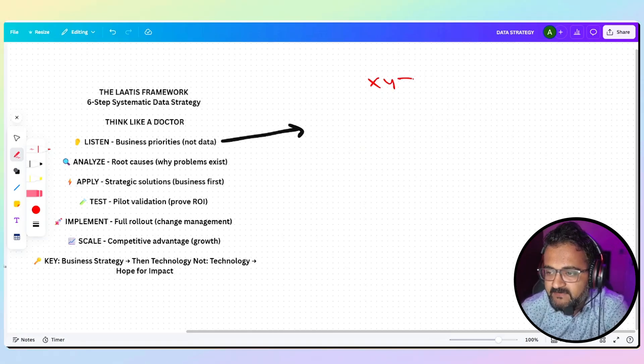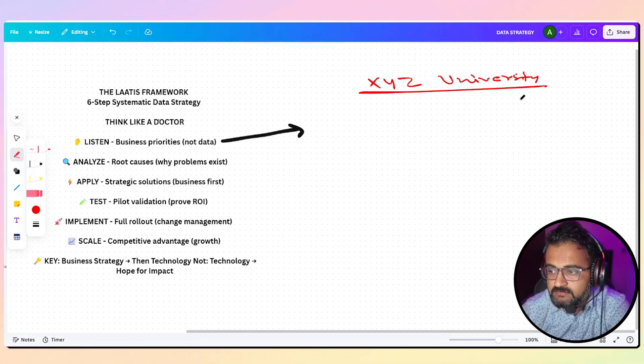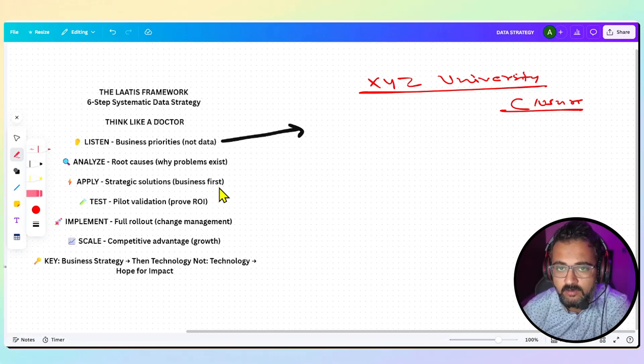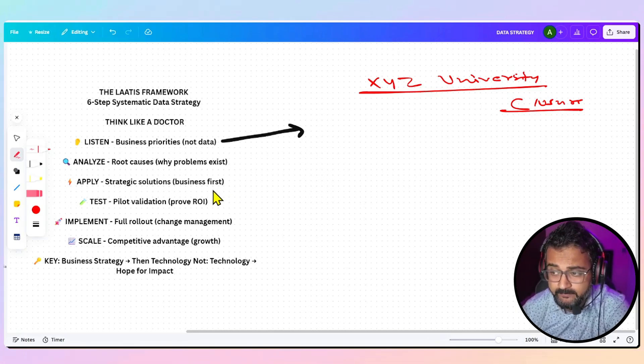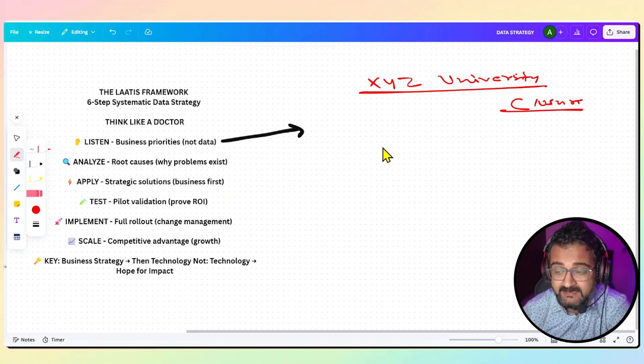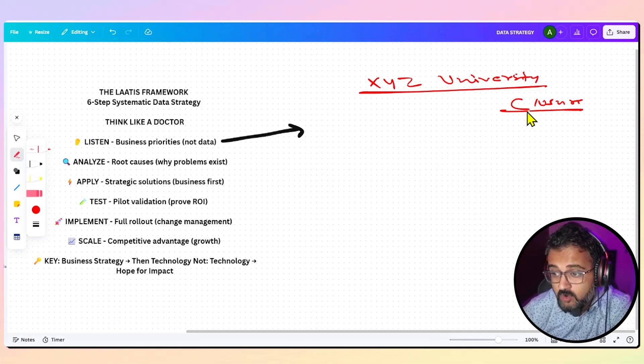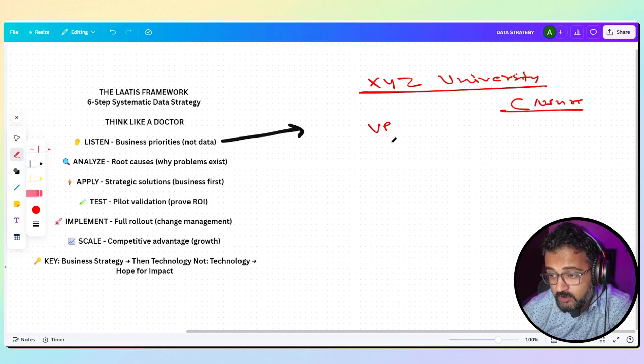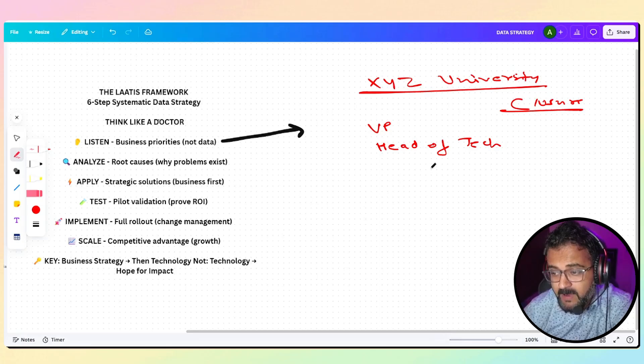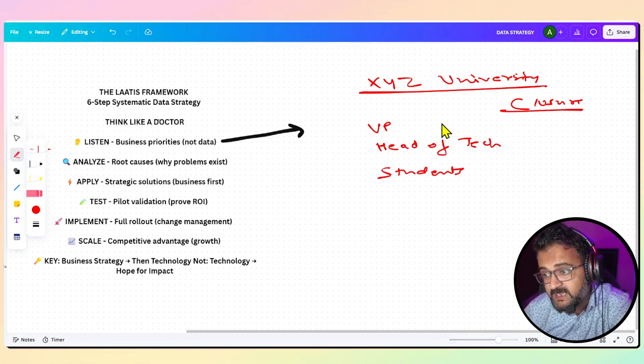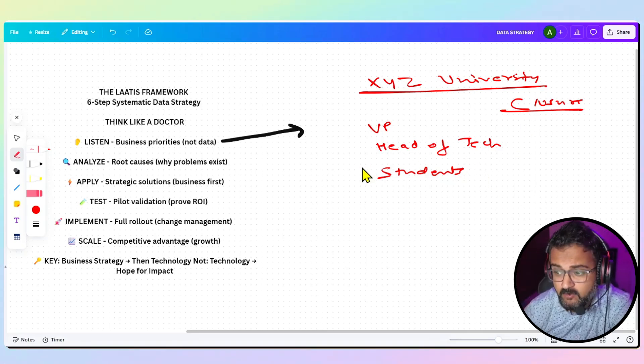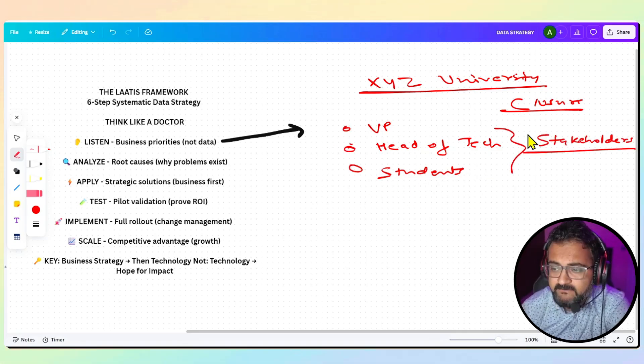Take for example there is a university, XYZ University, which is on the verge of closure because this university is not getting enough enrollment. No one is enrolling, while they have the best in class things—the course, the curriculum, everything. You will go to the business, you will talk to the VP of enrollment, you might talk to the head of technology, you might talk to students, and you will try to understand what could be the possible problem. For VP there could be a separate problem, for head of technology a different problem, for students a different problem. These are your stakeholders.